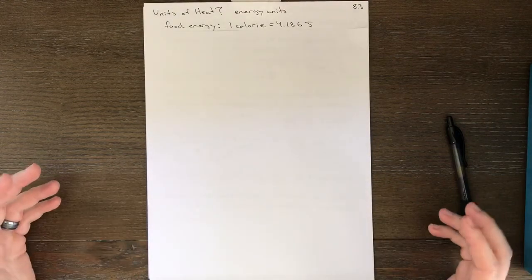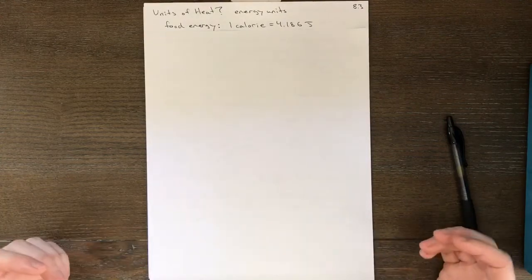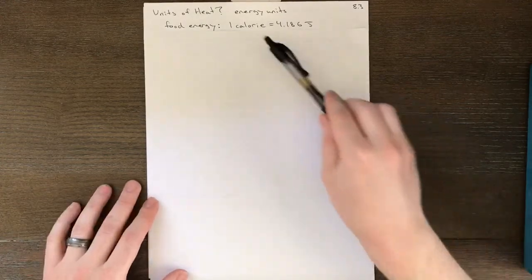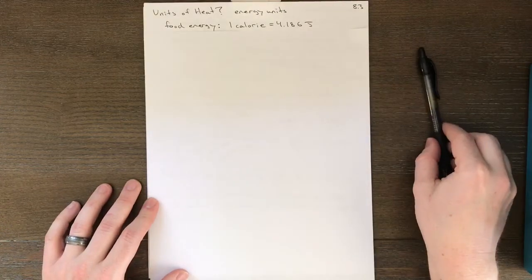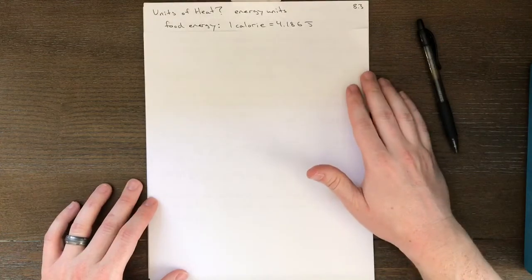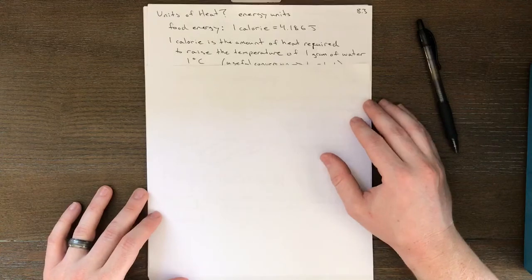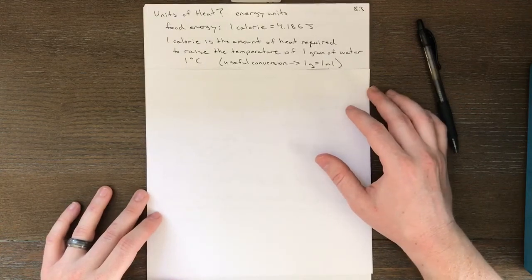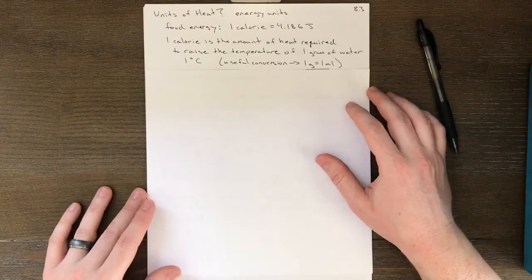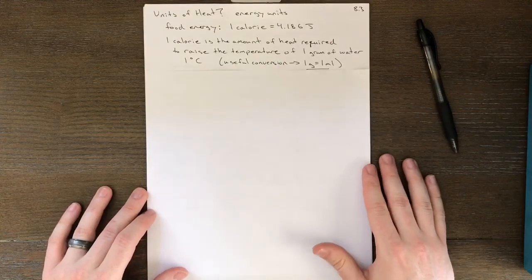So most commonly we're going to be using food energy units, or calories, and recall one calorie is 4.186 joules, and remember joules are actually a pretty small unit. A calorie is not much energy at all. In fact, one calorie is defined as the amount of heat required to raise the temperature of one gram of water one degree Celsius.